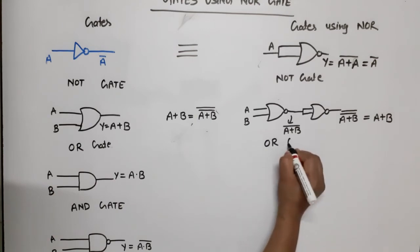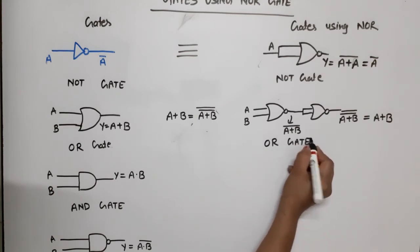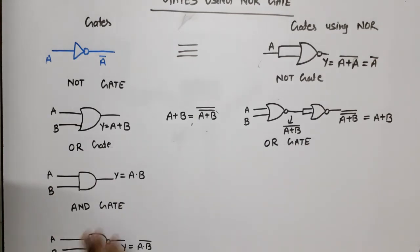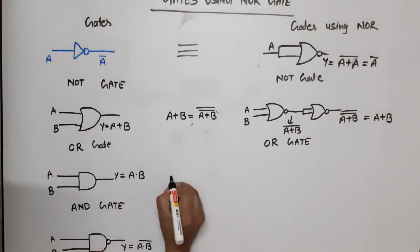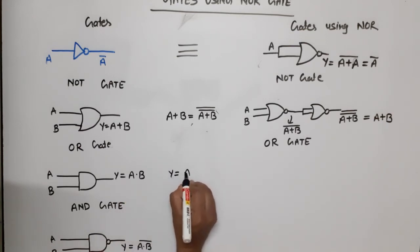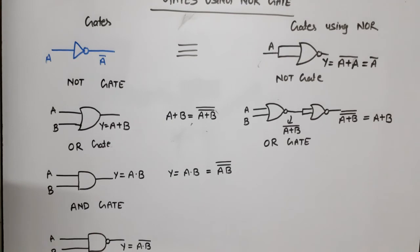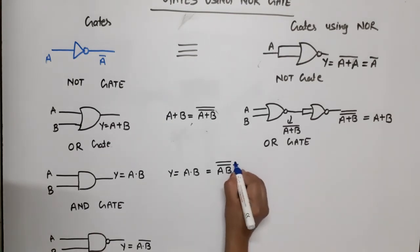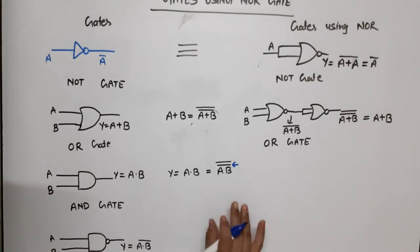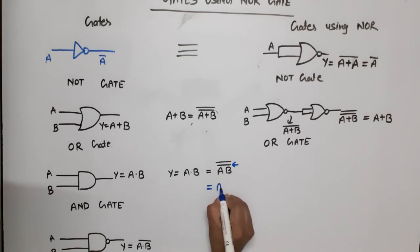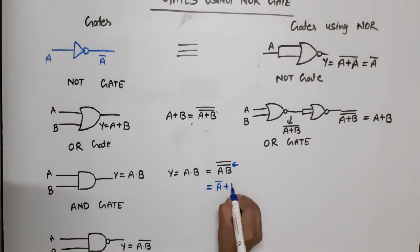Now AND gate using NOR. AND gate output Y is equal to A dot B. It can be written as A dot B bar bar. By De Morgan's theorem, we can break the inner complement: it becomes A bar plus B bar, bar.